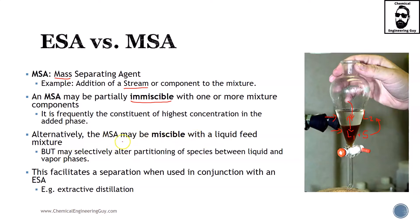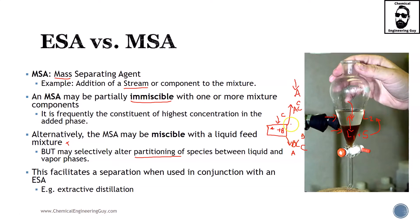Alternatively, the MSA may be miscible with the liquid mixture. Another example is in azeotropic mixtures: you have a binary mixture of A and B forming an azeotrope, but when you add an extra material C, it can allow the azeotrope to break and separate — perhaps A and C, and B and C. This selectively alters the partitioning of species between liquid and vapor phases, so you may have a lot of A in one phase and mostly B in another. This facilitates separation when used in conjunction with an energy separating agent, which is the most common approach — using both MSA and ESA together.